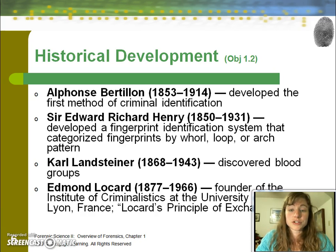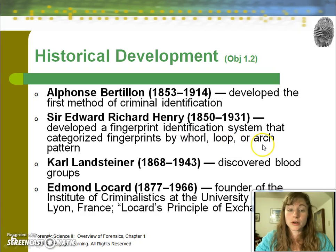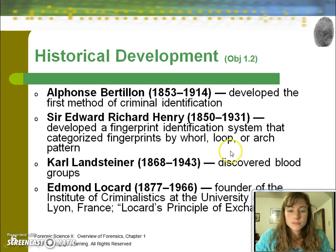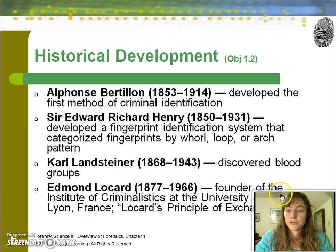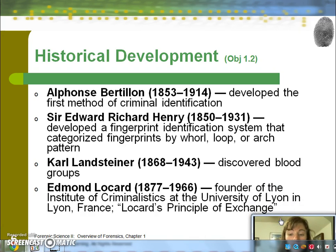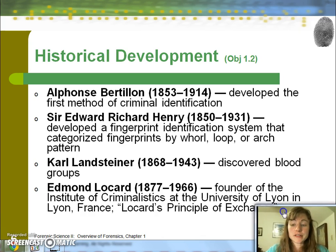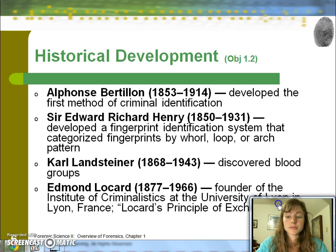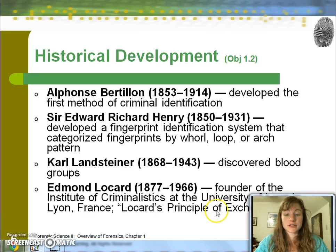Sir Edward Richard Henry was the one to distinguish fingerprints by three major categories — whorl, loop, and arch — which we still use today. Then came the discovery of blood groups, followed by Edmund Locard's Principle, which is still used today and is the basic piece behind our use of trace evidence.